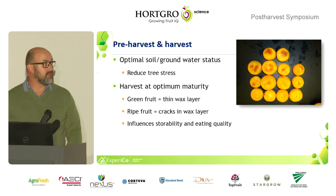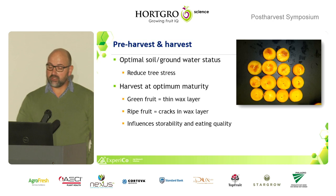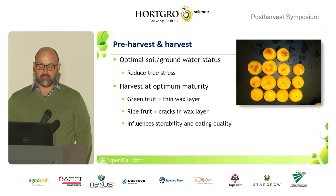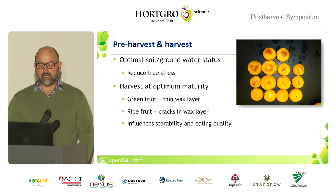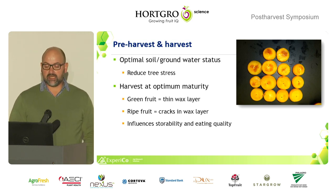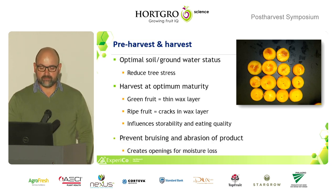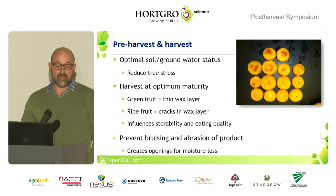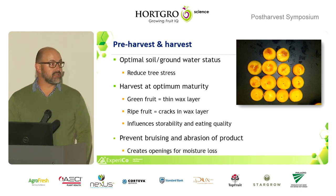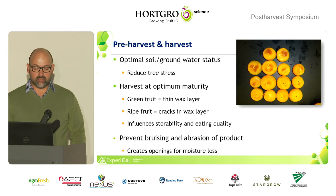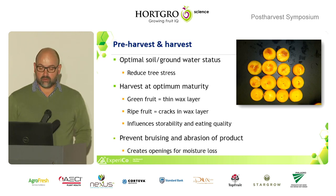Regarding harvest maturity parameters, you have to harvest at optimum maturity. Greener fruit generally has a thinner wax layer, while riper fruit may have cracks in the wax layer — both influence storability and eating quality. Pickers and handling of fruit must prevent bruising and abrasions, because every wound creates an opening for moisture loss, and decay can also be an issue.